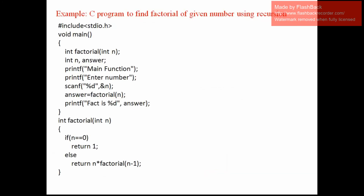We will see one more example. This is a small program which will find the factorial of a given number using recursion. You may have already studied the factorial of a given number using a loop, but here we are going to discuss how to find the factorial of a given number using recursion. Here the main is created. I have declared the factorial function, and in this function we are passing one argument or one input. This factorial function will return one integer, and I have declared n and answer as integer variables.